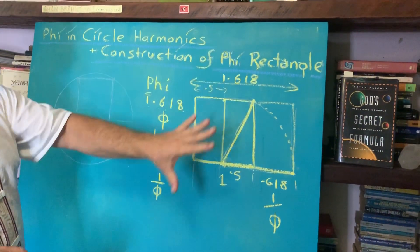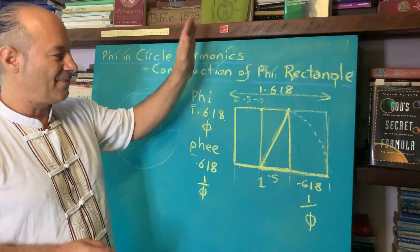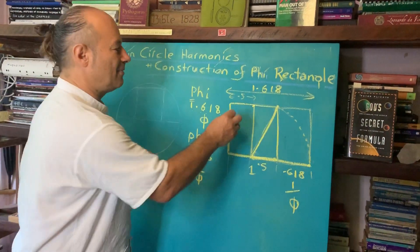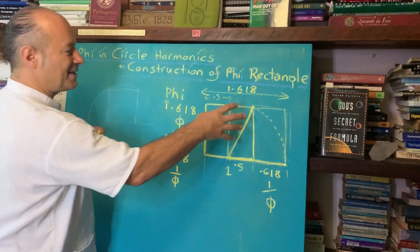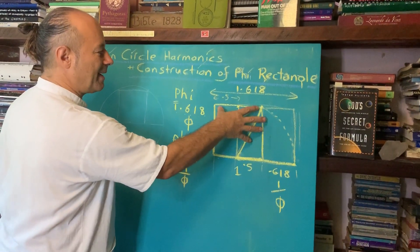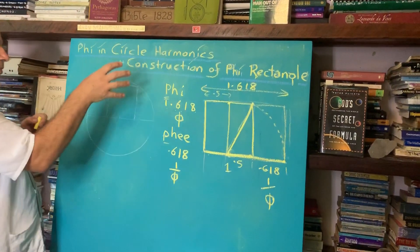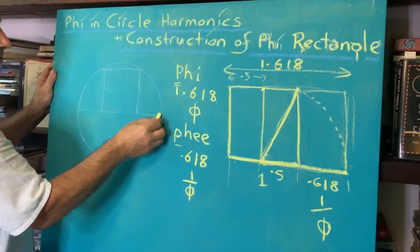This is how children and adults for thousands of years have drawn the golden rectangle like the Parthenon in Greece. We want to take this square and put it inside the circle.